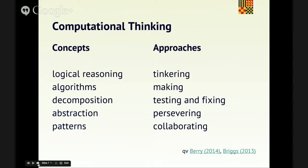Thinking about problems from a computing or computational thinking point of view involves capturing what's important and letting somebody else worry about the detail. A good computer scientist — typically — is a lazy computer scientist. We're looking for the simpler, more efficient, more elegant way of doing things. If somebody else has solved a similar problem, we can borrow their ideas and possibly their code too. Looking for generalizable results — how we can take one idea and apply it to a whole class of similar situations. And then the approaches you take: typically you're going to play with stuff. It's the same essential idea of tinkering, of adapting something to a new purpose. At its heart, it is a creative discipline.